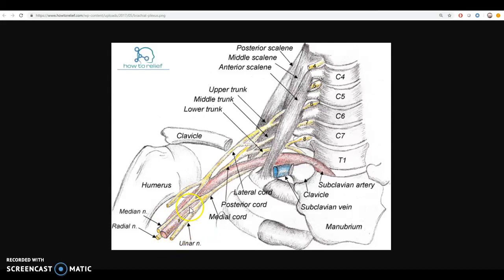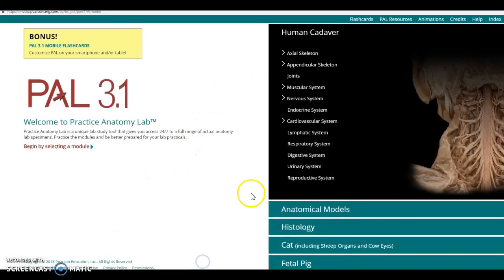Ulnar nerve going all the way to the palm intrinsics, the median nerve going to the wrist and digital flexors or forearm flexors, and that musculocutaneous nerve staying proximal and going to the biceps muscle. If you want to see this in the cadaver,